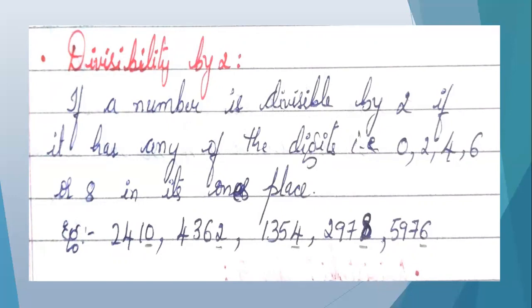Next number is 2978. The ones place digit is 8. 8 is divisible by 2 — 2 into 4 is 8. Next number is 5976. The ones place digit is 6. 6 is divisible by 2 — 2 into 3 is 6. So the test of divisibility by 2 is: check the digit in ones place. If ones place has 0, 2, 4, 6, or 8, then the whole number is divisible by 2.